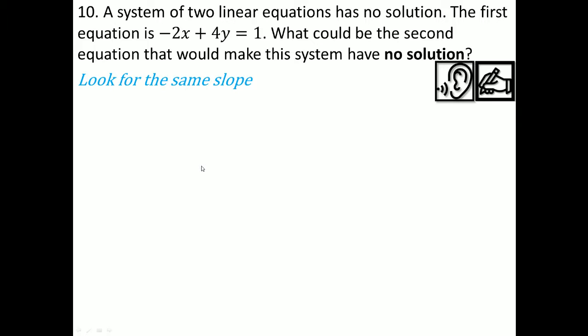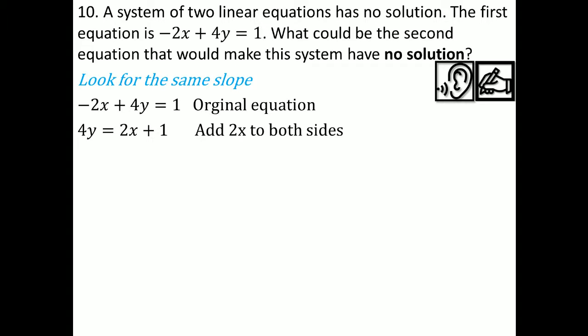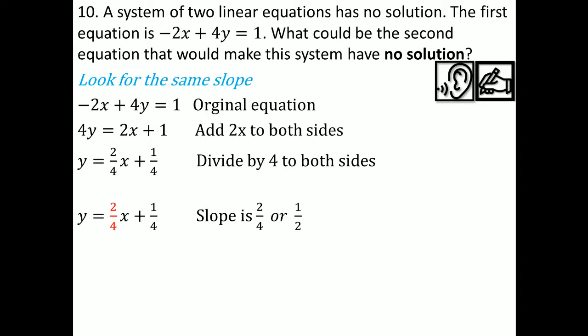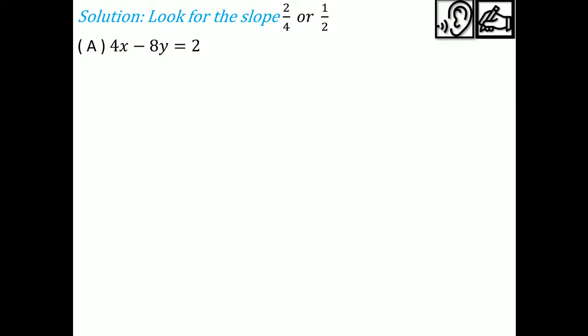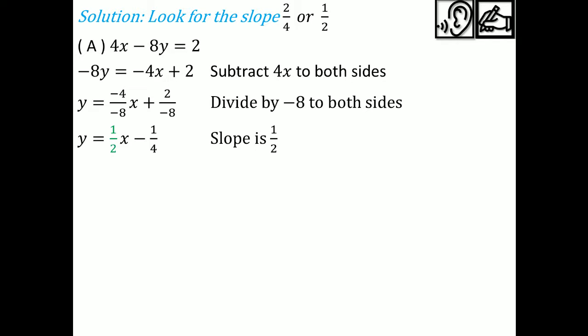Let's verify the old way by looking for the same slope — parallel lines have no solution. For the original equation, I add 2x to both sides then divide by 4. The slope is 2 over 4, which reduces to one half. Now for option A — 4x minus 8y equals 2 — I subtract 4x from both sides, then divide both sides by negative 8. Negative 4 divided by negative 8 is one half; 2 divided by negative 8 is negative one fourth.